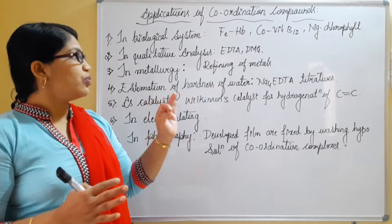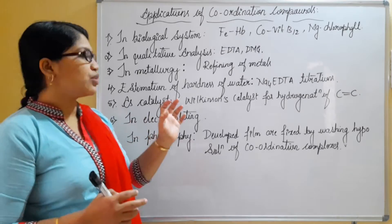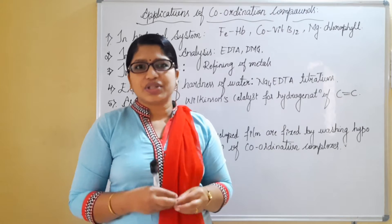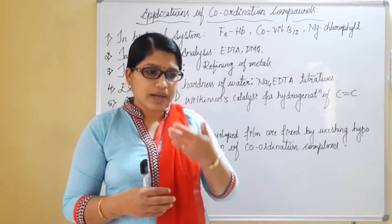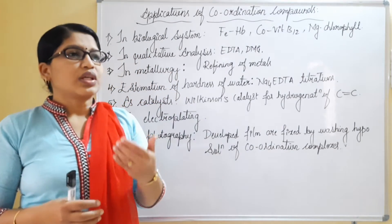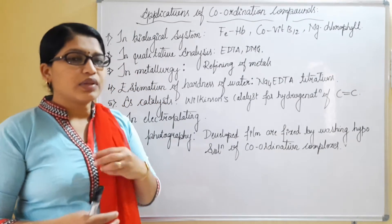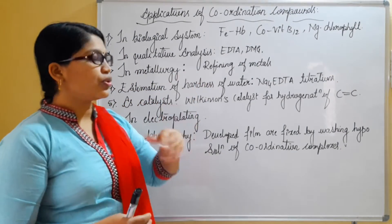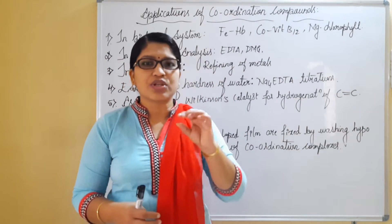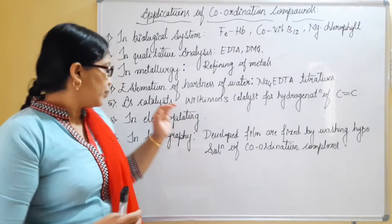Fourth, estimation of hardness of water. Calcium and magnesium salts dissolved in water make it hard water. To check how much hardness the water contains, EDTA titrations are used. EDTA is treated with the metal ions, and the titration gives an estimation of the amount of hardness present in the water.